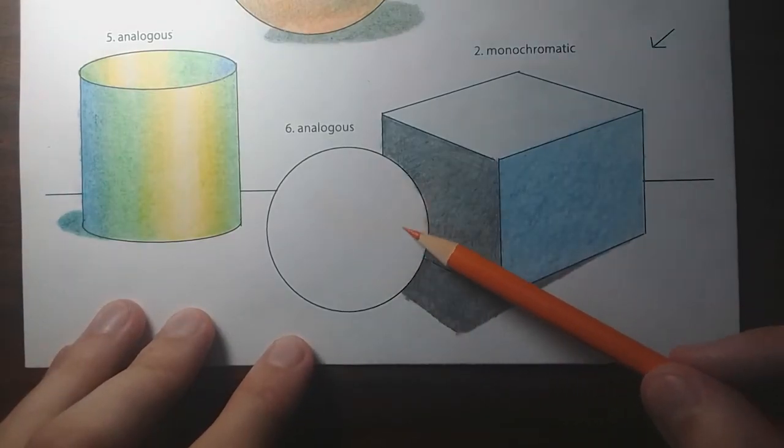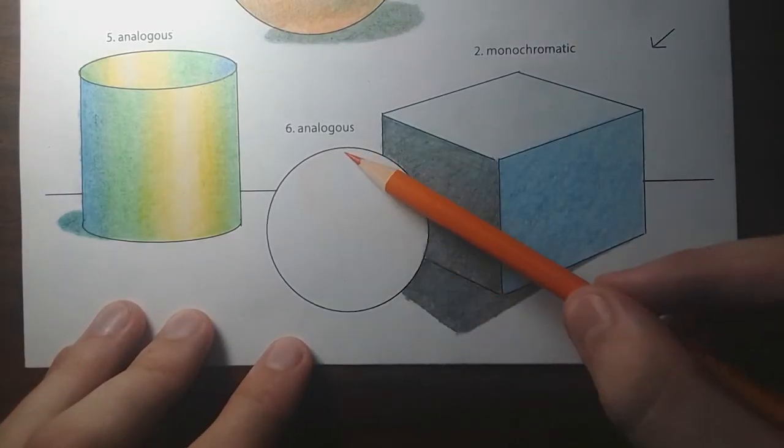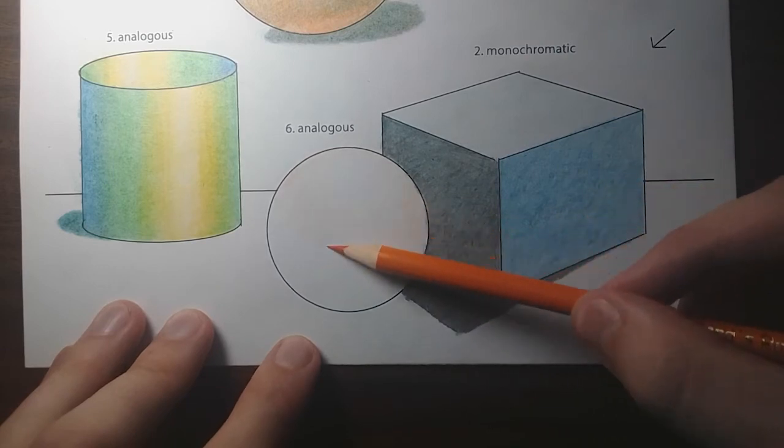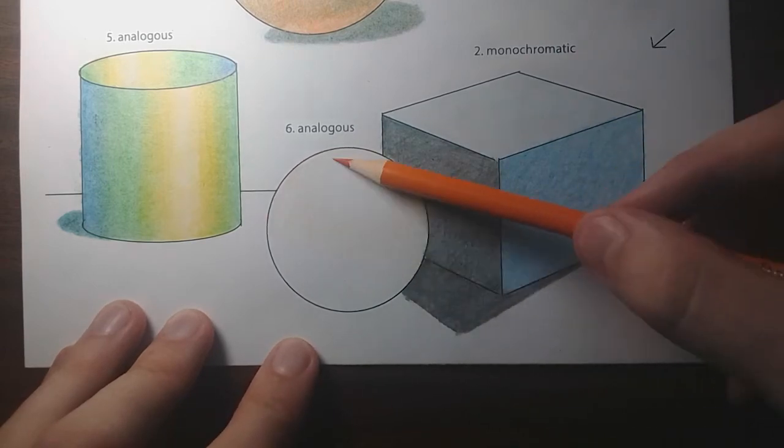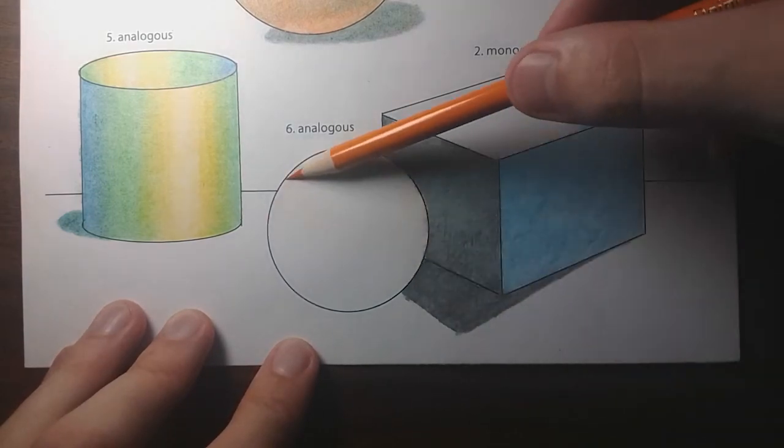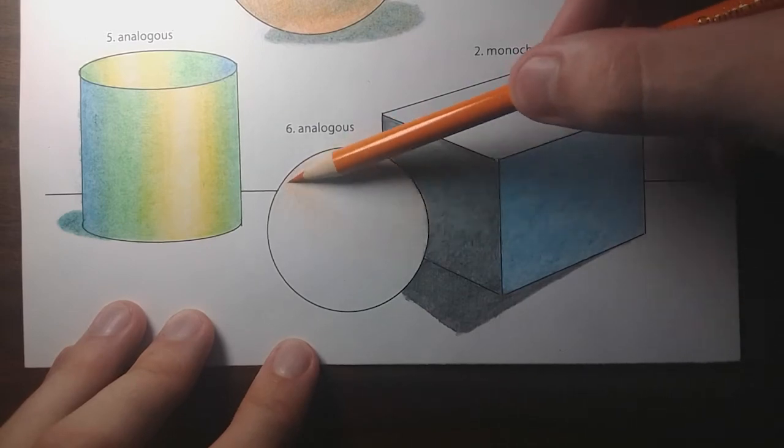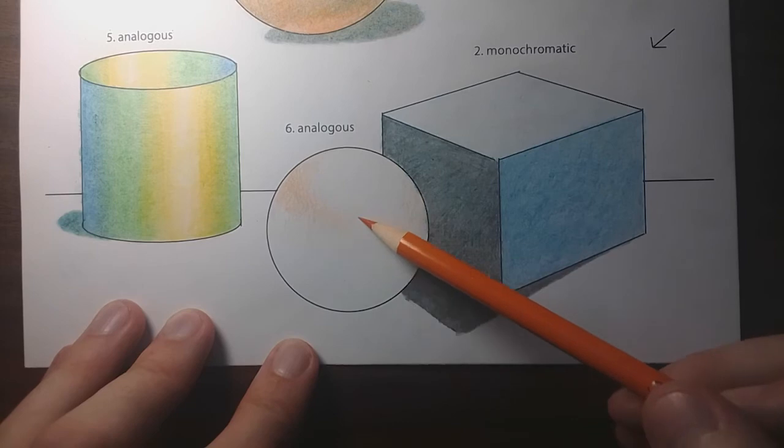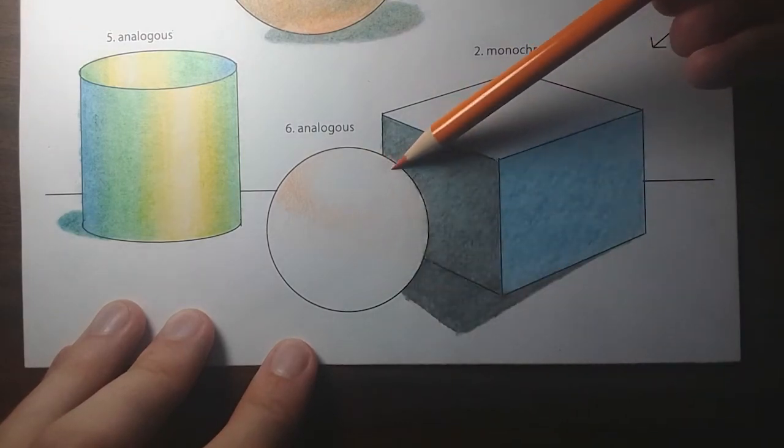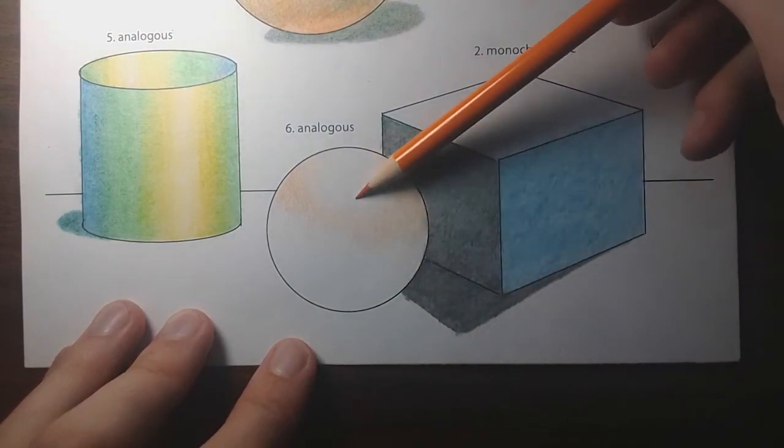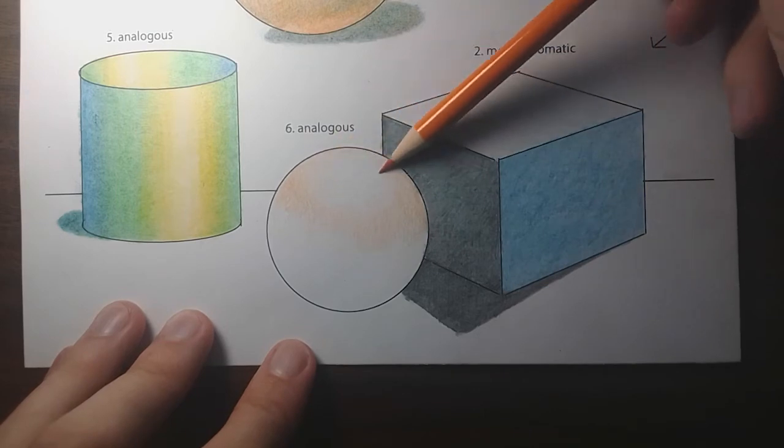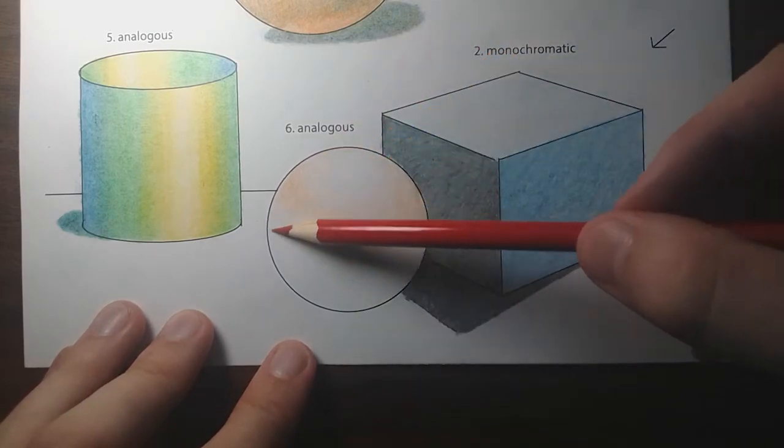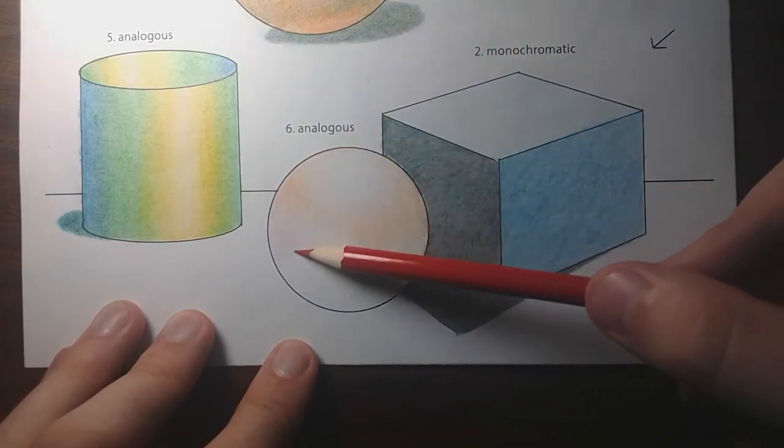Our final form will be the analogous sphere. We'll be combining the techniques of filling in an analogous color scheme and filling in the areas of value around a sphere. In this color scheme I've chosen orange, red-orange, red, red-violet, and violet. And once again I'm using the naturally brighter colors to be my highlight area and then the naturally darker colors to be my base tone and cast shadow.